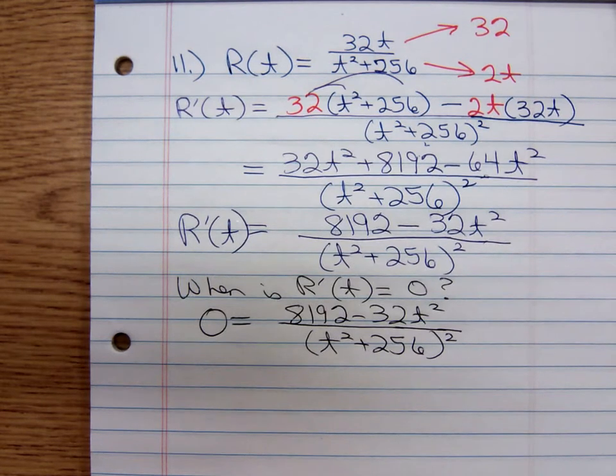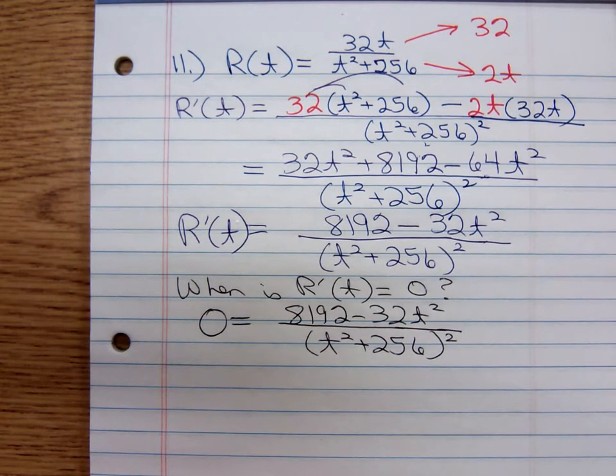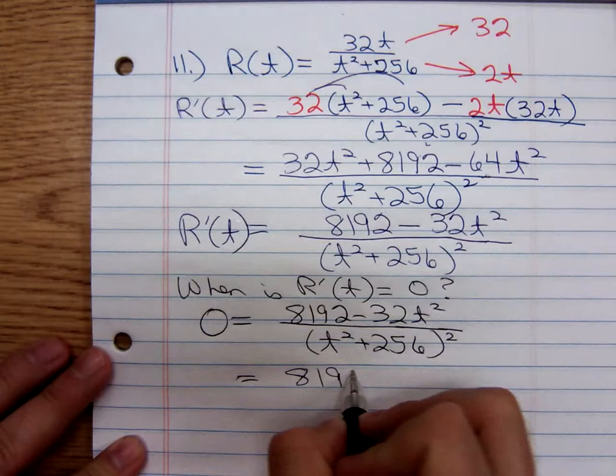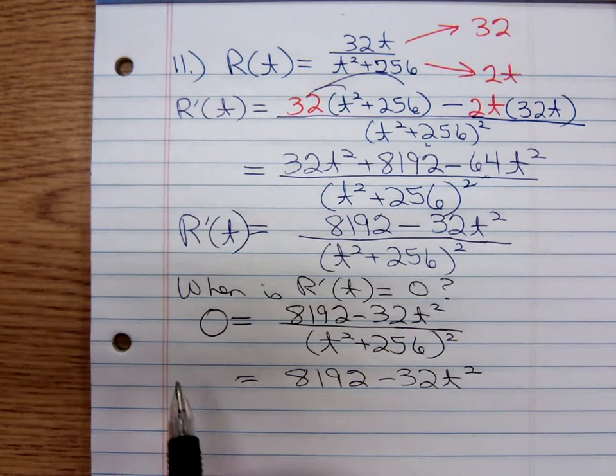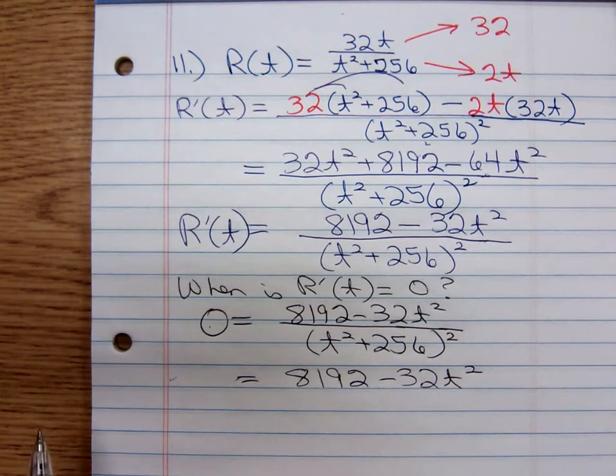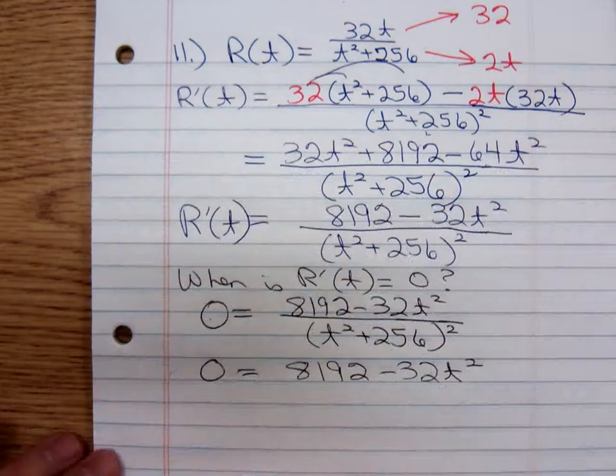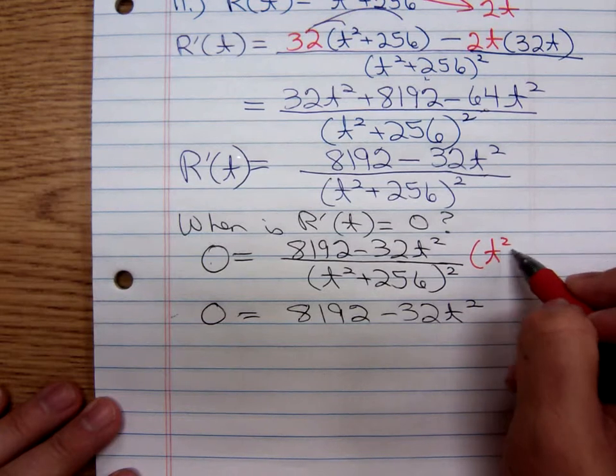Set the derivative equal to zero. The first thing I would do is multiply both sides by that denominator. When I do that, what am I going to be left with on the right-hand side? If I multiply both sides by that denominator, all I'm going to be left with is that numerator: 8,192 minus 32t². What have we got on the right side? It's zero times the denominator, which is zero. If you have a fraction set equal to zero, this is one of those things—if you don't get anything else out of this class, I want you to get this idea.